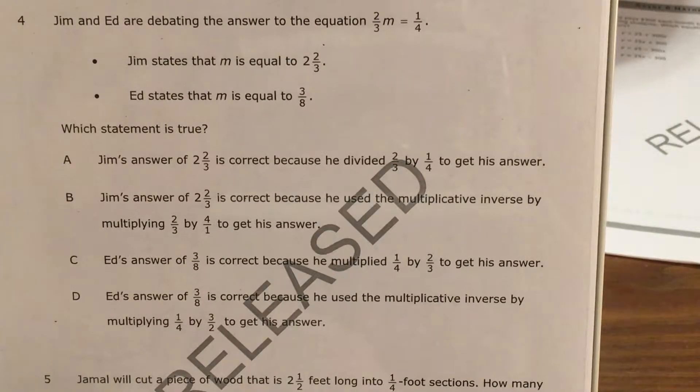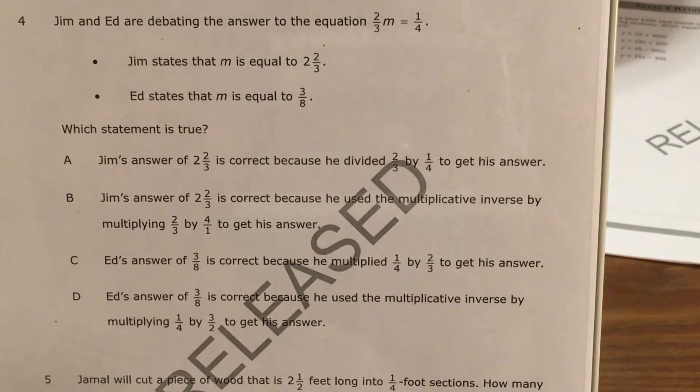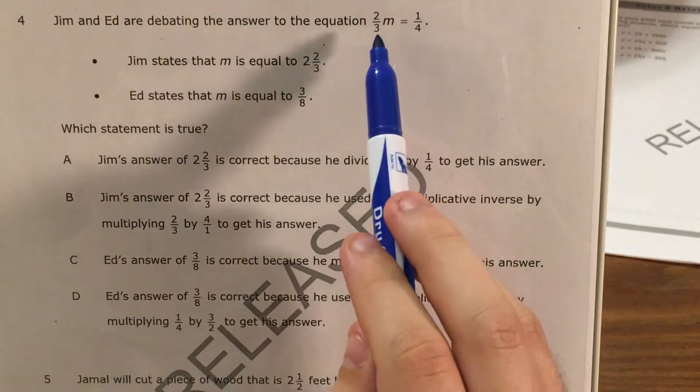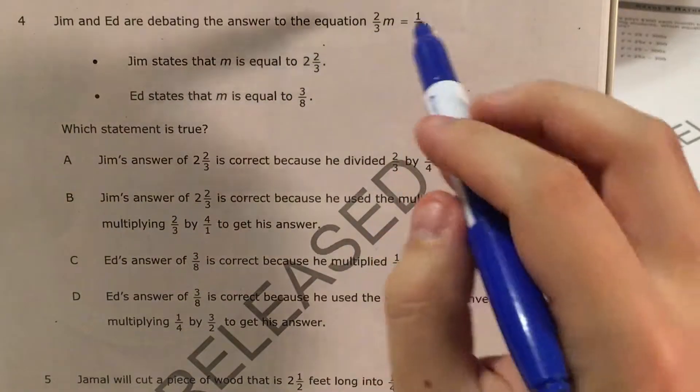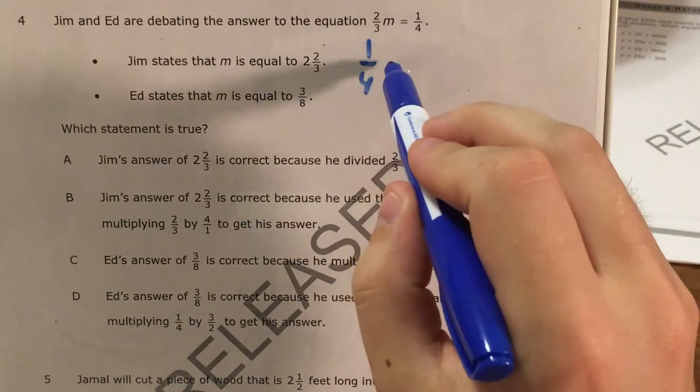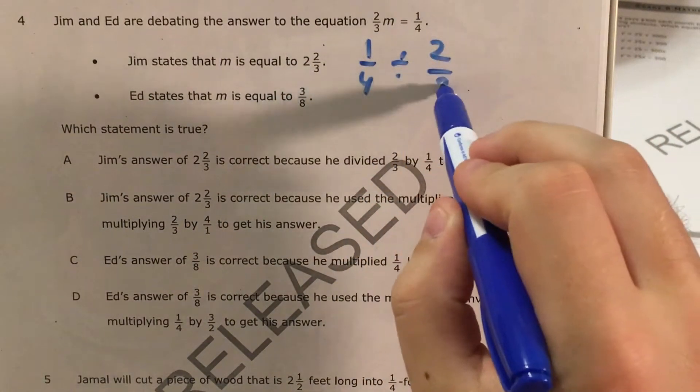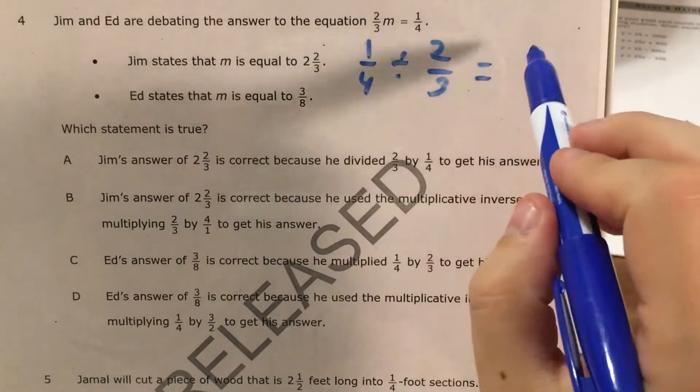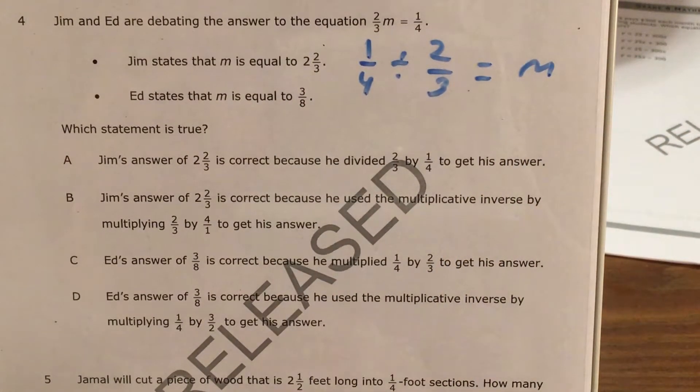And if you saw many of my videos for the third, fourth, and fifth grade math questions, you know that one thing that I would almost always use to solve an equation like this was the idea of a fact family. The idea that if I know that two-thirds times some number equals one-fourth, then I know that one-fourth divided by two-thirds equals that same unknown number. So that's the strategy that I'm going to use for this one.